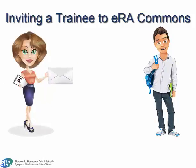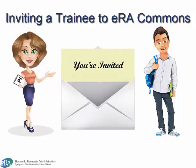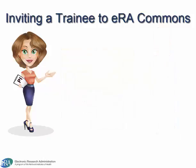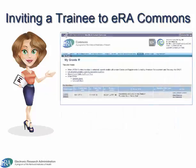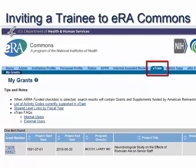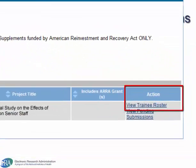Here are the steps a PI takes to invite a trainee to eRA Commons. The PI logs into Commons and clicks the X-Train menu option. They find the grant in question from the list of My Grants and click the View Trainee Roster link in the Action column.